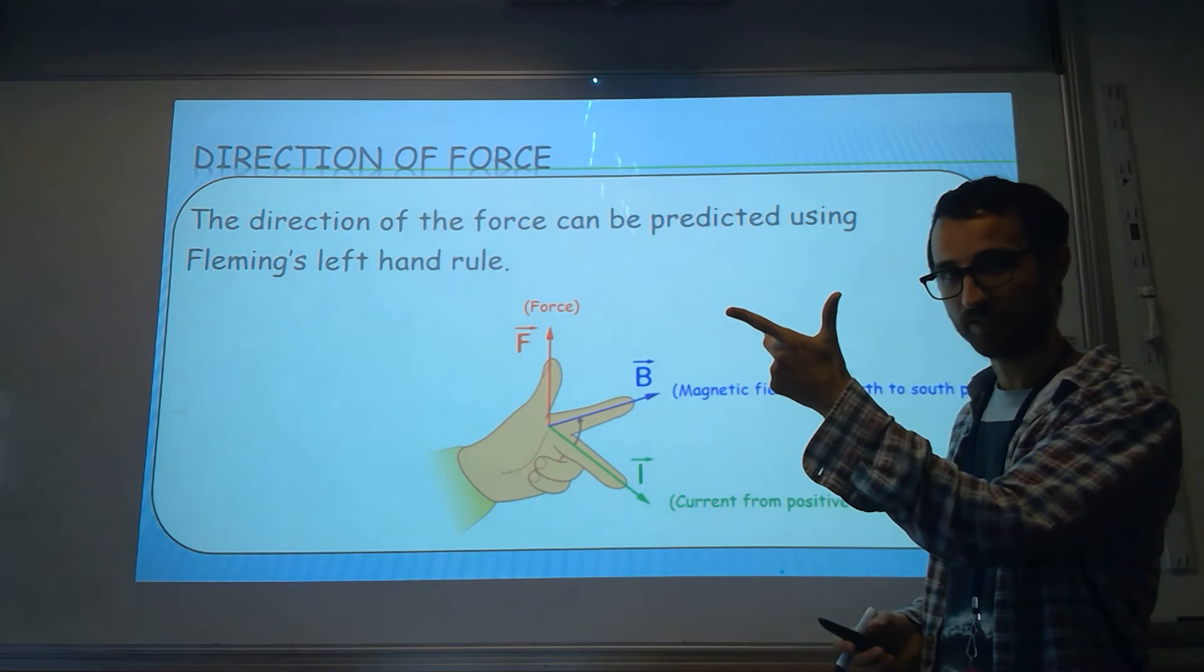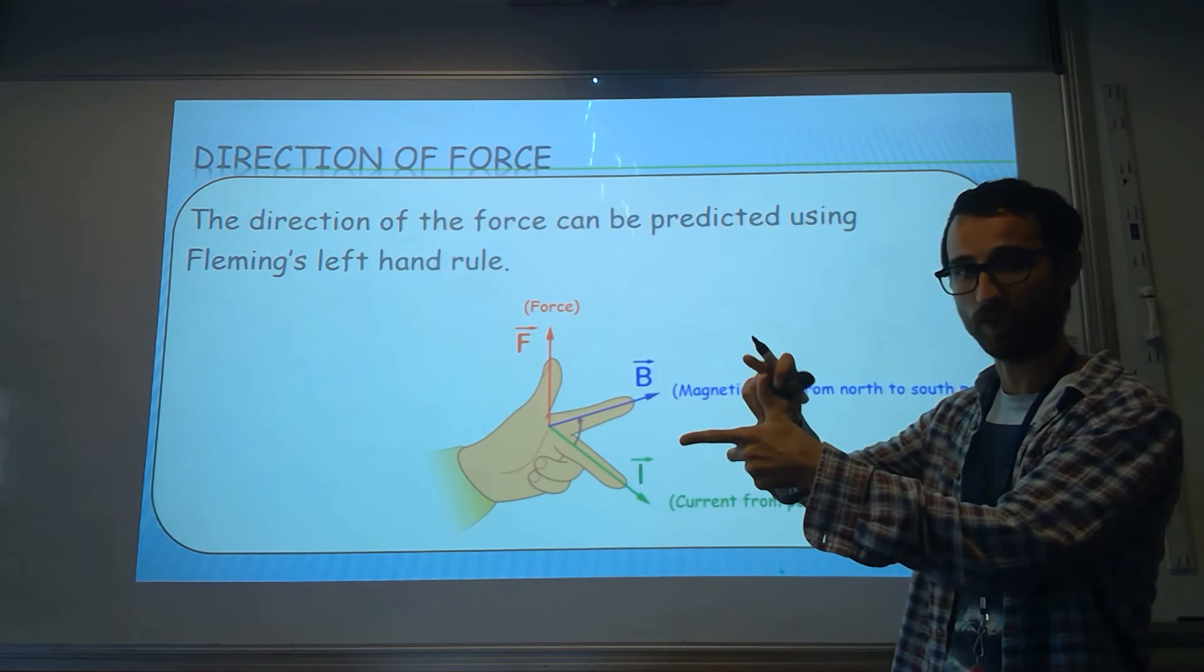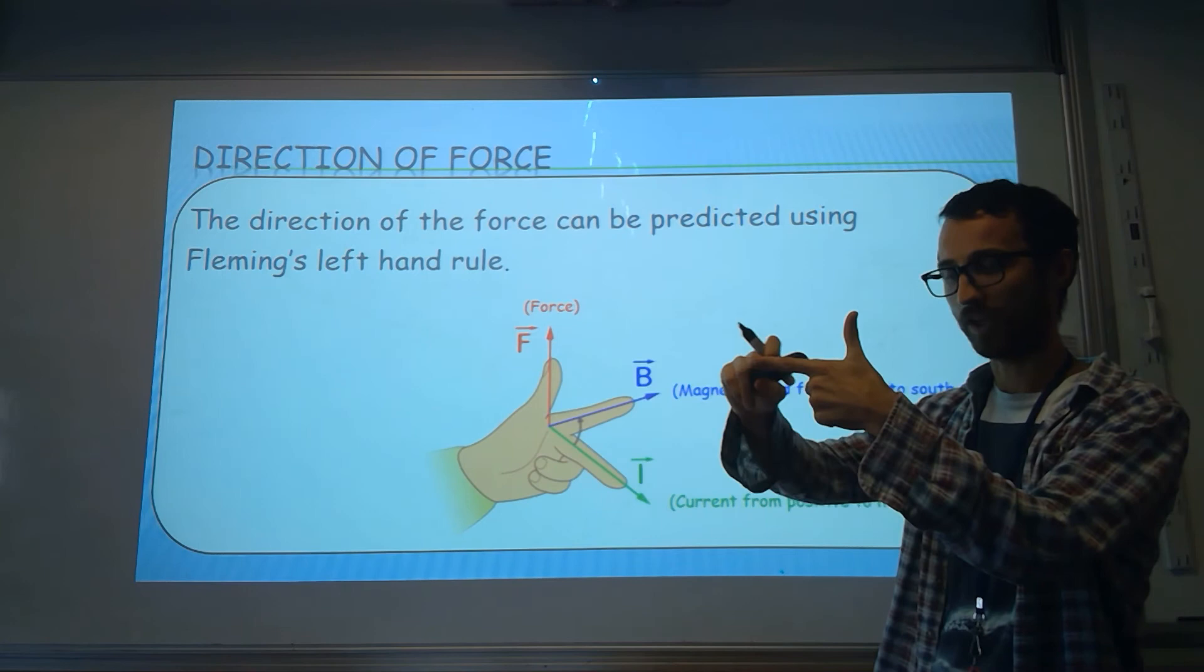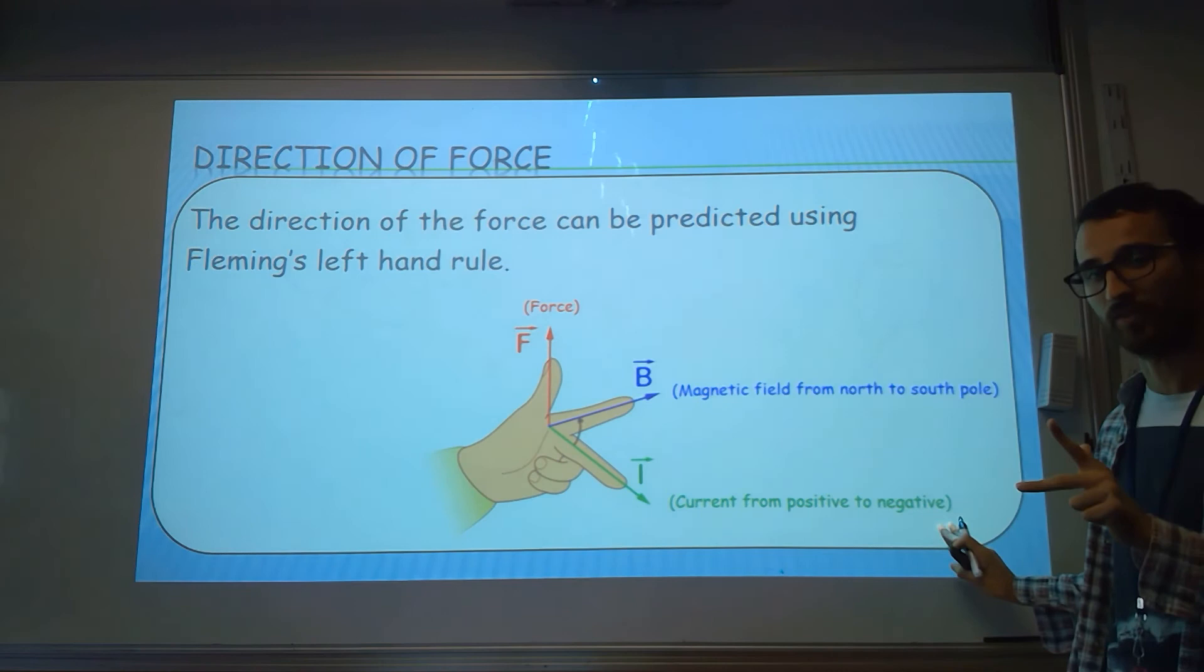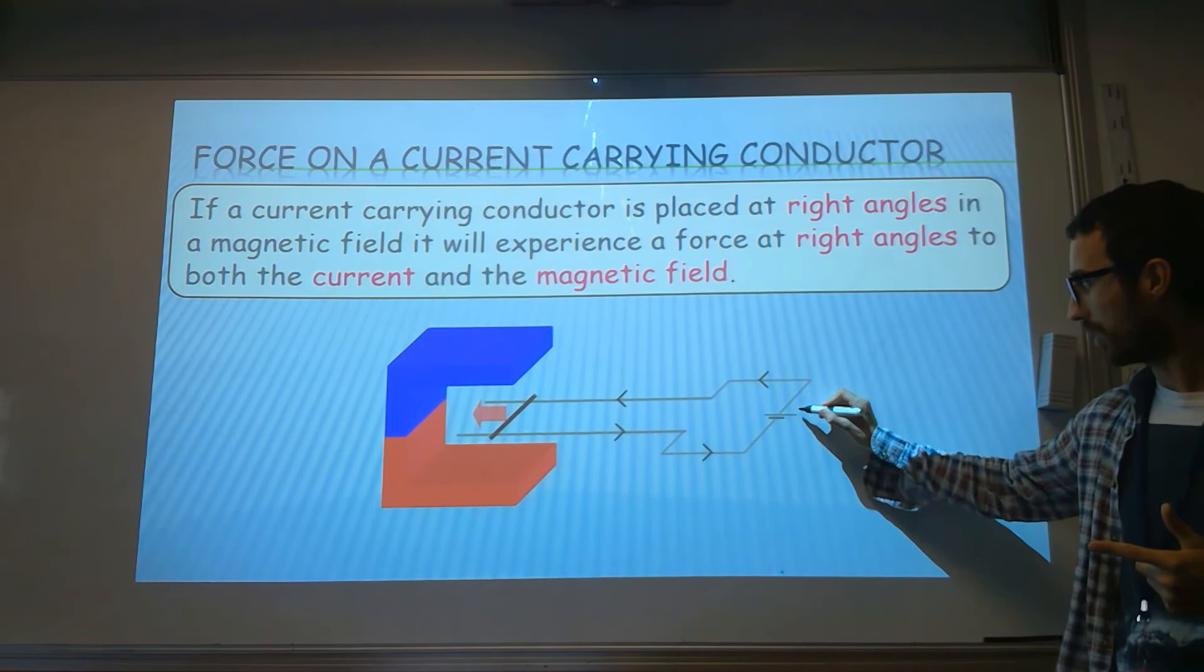Fleming's left-hand rule is with your left hand, as it's in the name. The thumb is the force, direction of the force, the direction of the movement. This is the magnetic field direction from north to south - that's your first finger. And the second finger is the current. Remember we use conventional current, so it's from positive to negative.